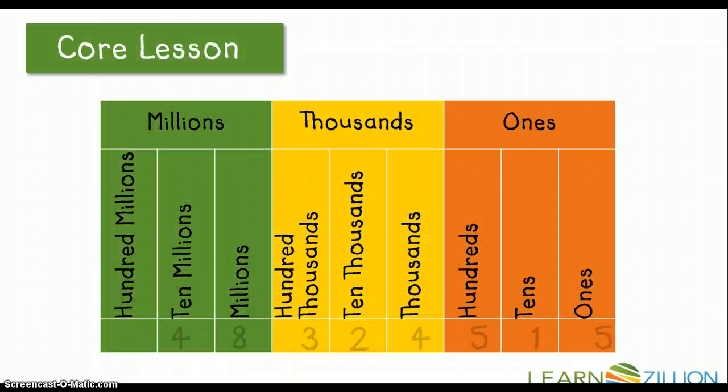Let's take a look at another number. If we were writing this number in numeric form, again, we would have to put a comma in the beginning of each period. We would have to put one in the beginning of the thousands period. And we'd also have to put one in the beginning of the millions period. So we would say this number, 48,324,515.